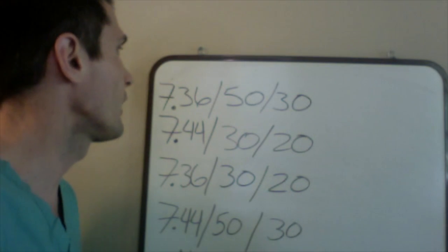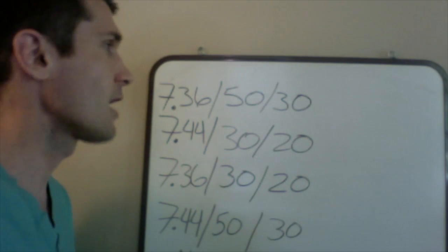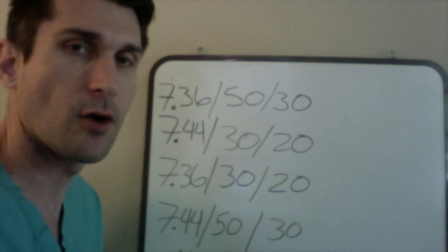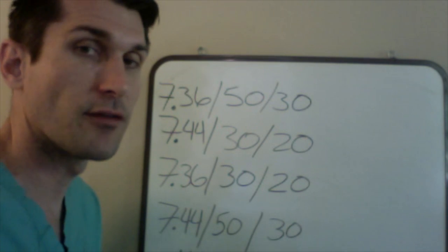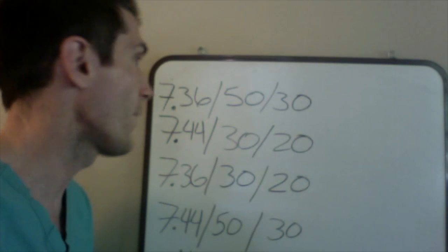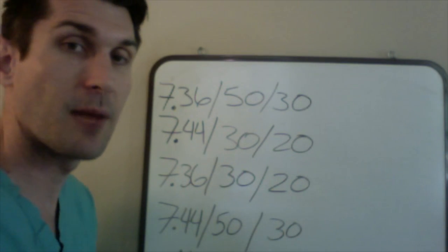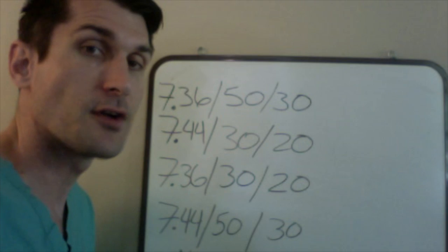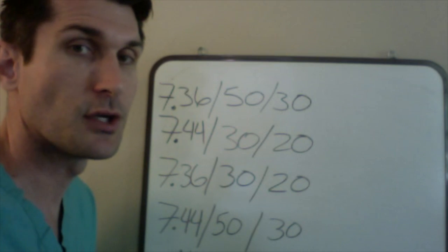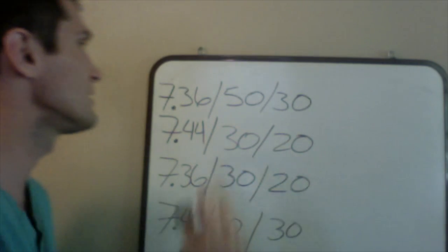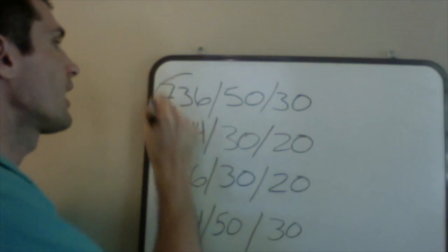We're going to keep it pretty simple. The first one we're going to talk about is this top blood gas. When you're a nurse on the floor and you get this result back, what are you going to do? Well, like we talked about in my previous video, the first thing you're going to do is look at the pH and see if it's out of range or not.